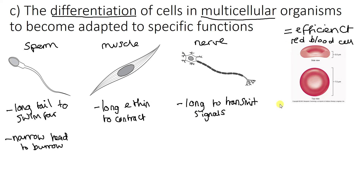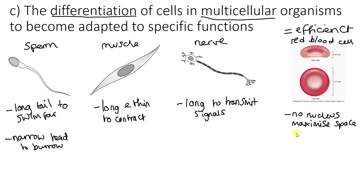Lastly but not least is the red blood cell. An adaptation of this cell is that it has no nucleus, and that is to maximise space for oxygen. Because that is the job of a red blood cell — they carry oxygen around the body so that we can use it in different places. Maximise space for oxygen.